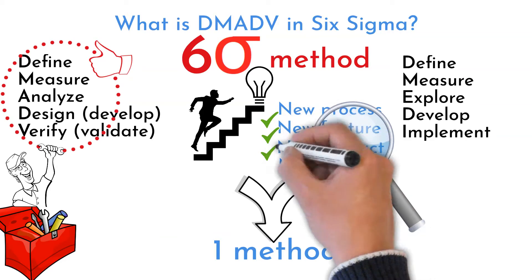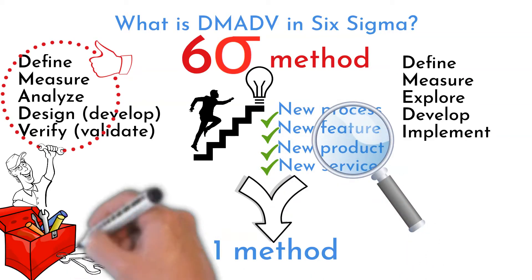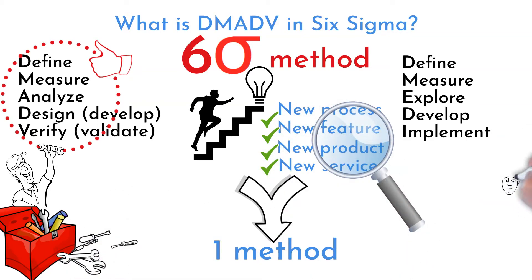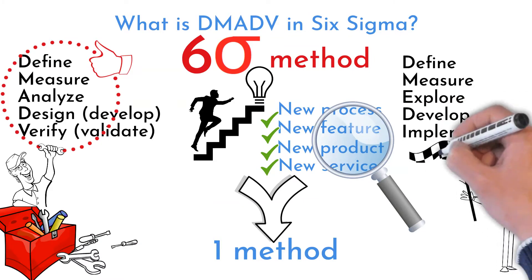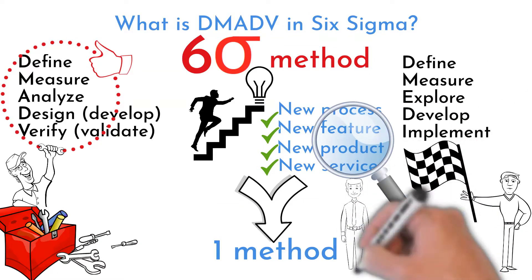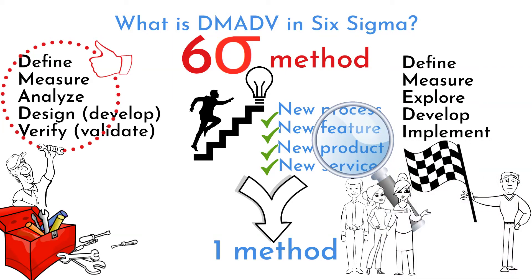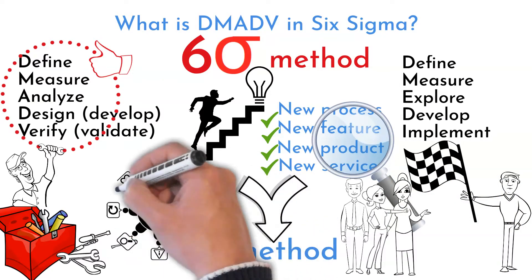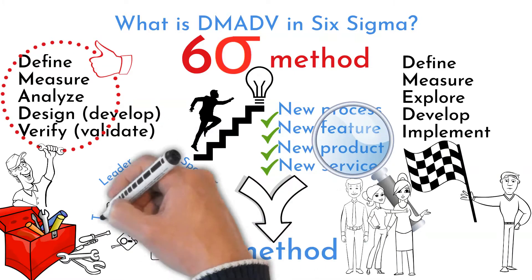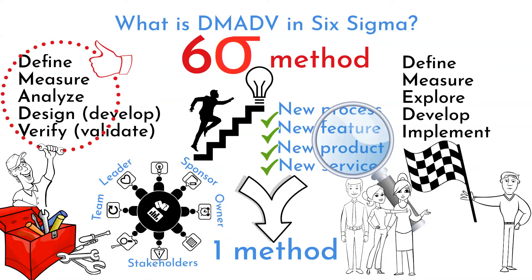You do it by exploring each phase, using tools one by one in the order I will share in a minute. Each phase is very important to go through and finish. DMADV should be a team effort. The project team structure is the same as on improving projects: project leader, project sponsor, project team, stakeholders, and process owner. Each team member has a specific and important role.